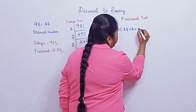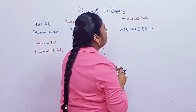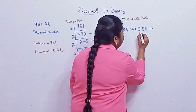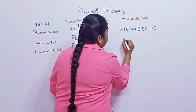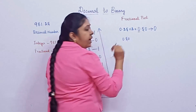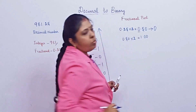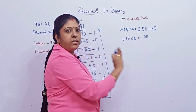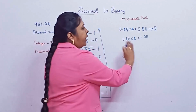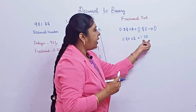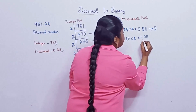0.25 multiplied by 2 gives 0.50. The integer part here is 0 and the fractional part is 0.50. So we note the integer part as 0. Then 0.50 multiplied by 2 gives 1.00. The fractional part has now attained 0, so we stop the iteration. The integer part noted here is 1. For different numbers where 0.00 cannot be attained, we stop at 3 iterations.